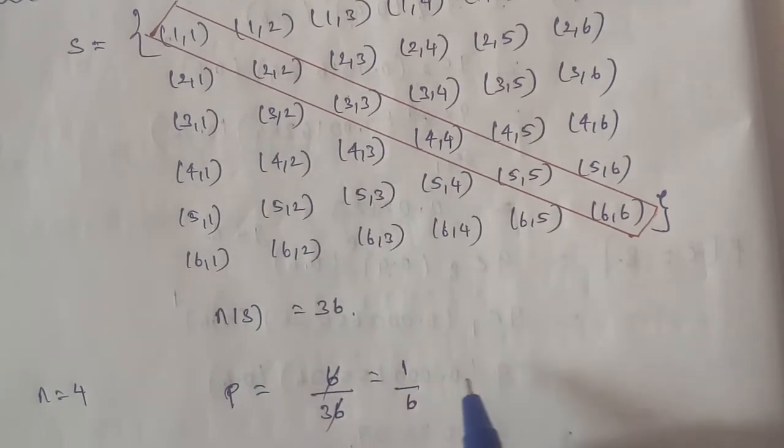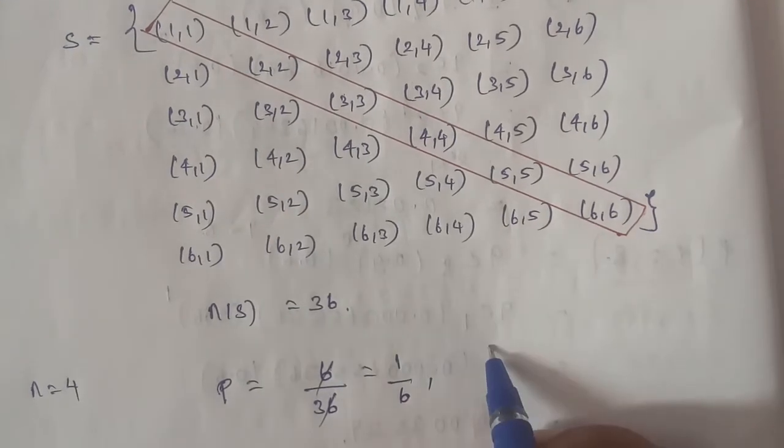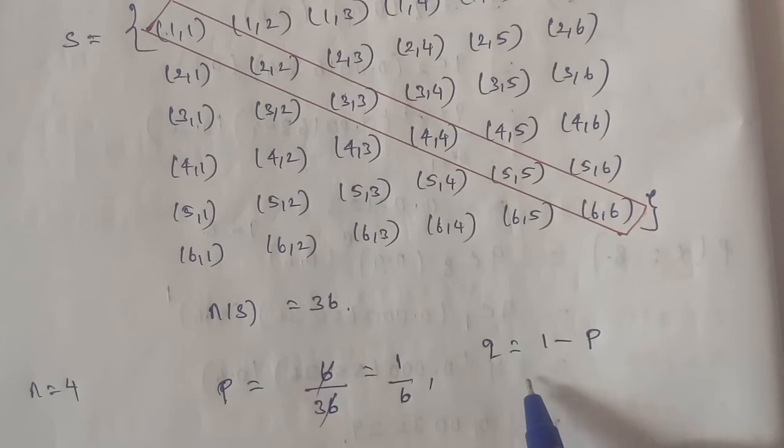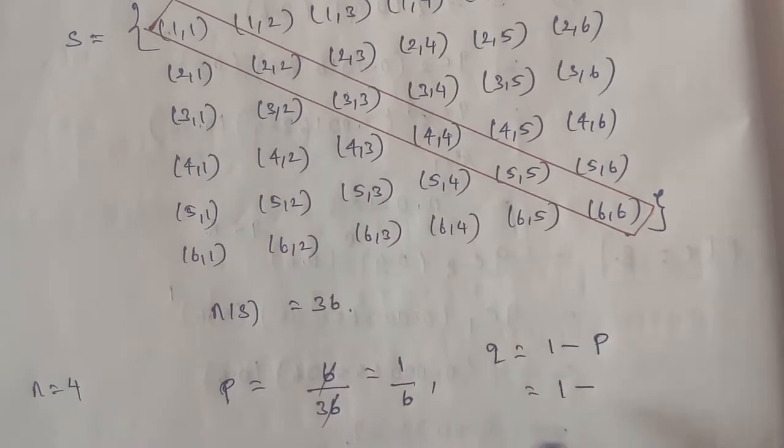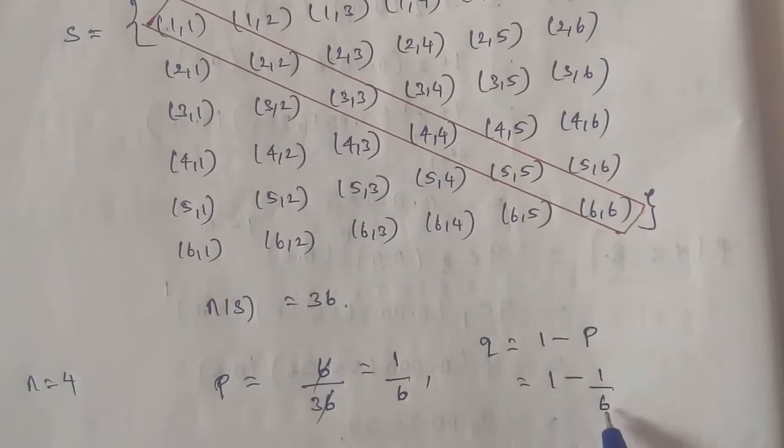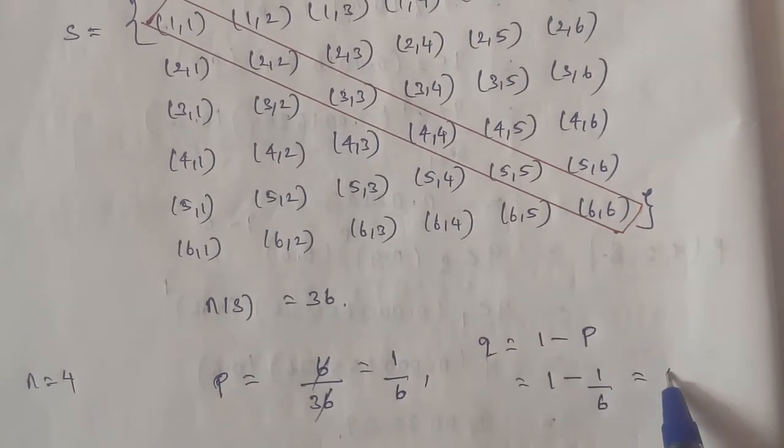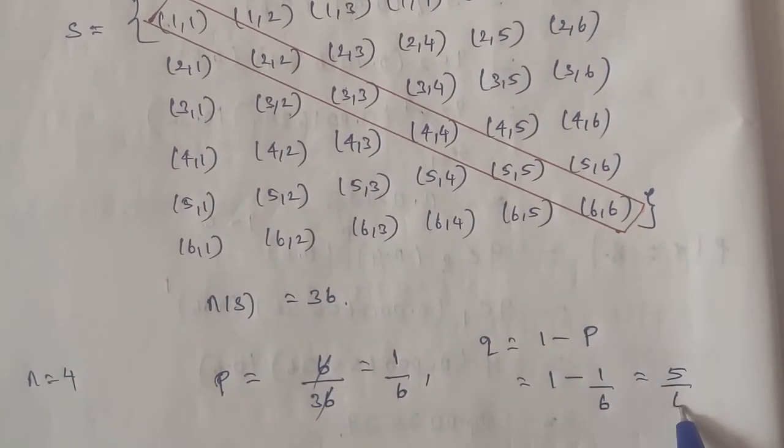Next, Q is equal to, we know the formula Q is equal to 1 minus P. P is equal to 1 by 6. If you cross multiply, 6 minus 1 is 5 by 6.